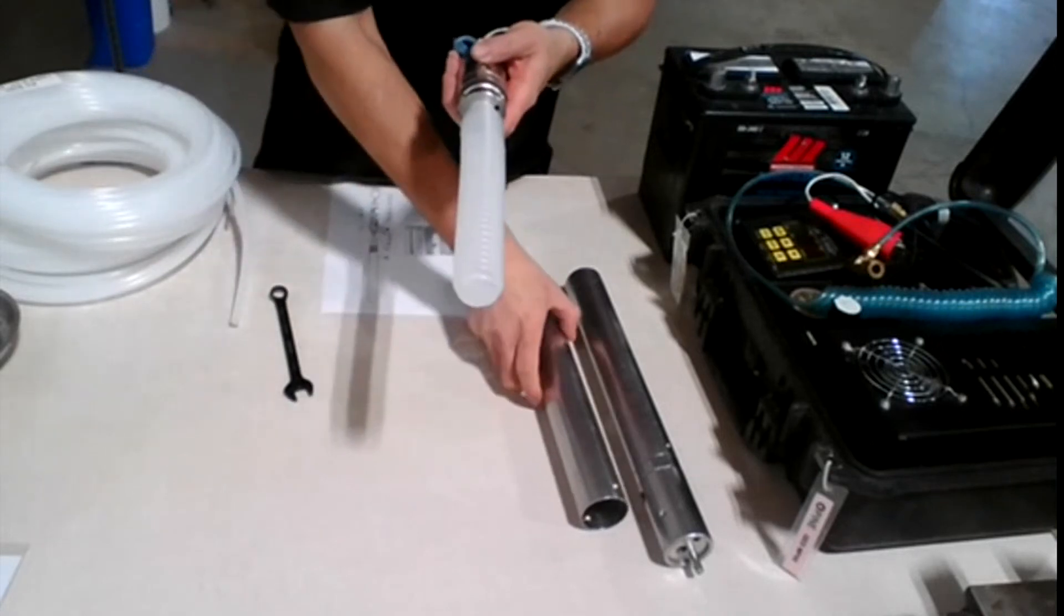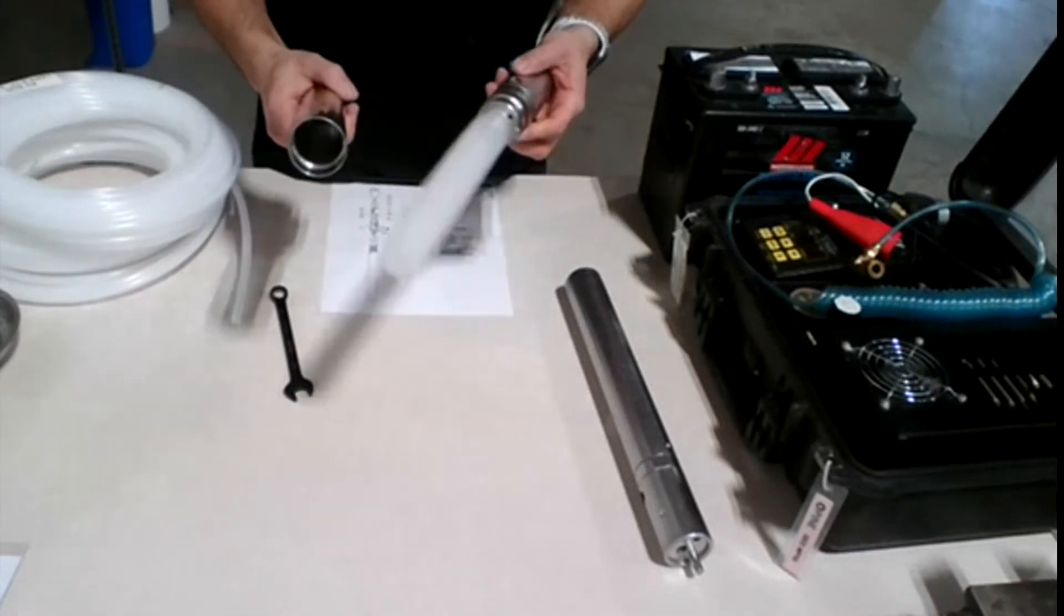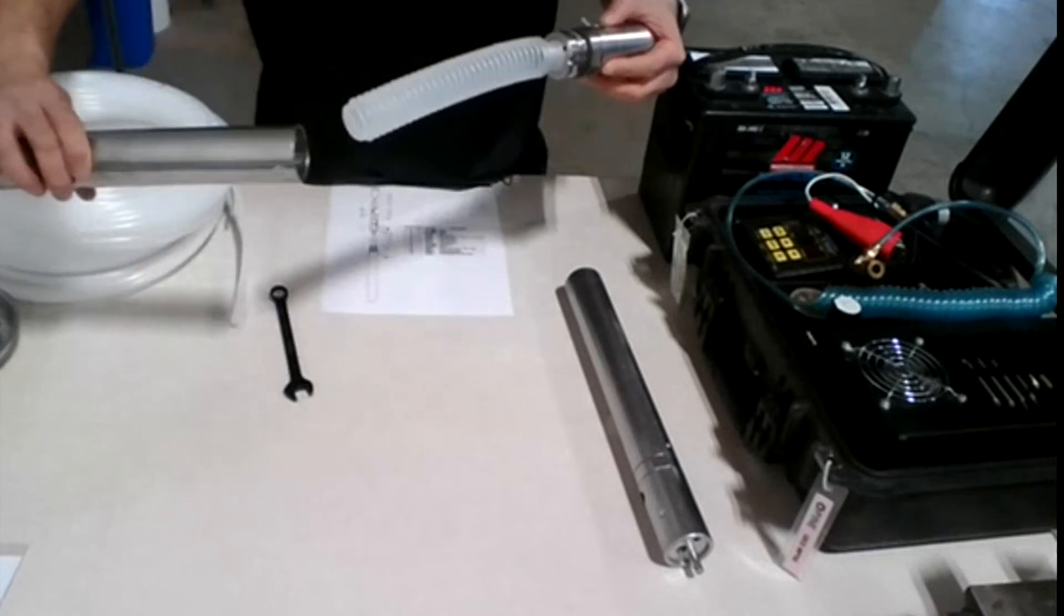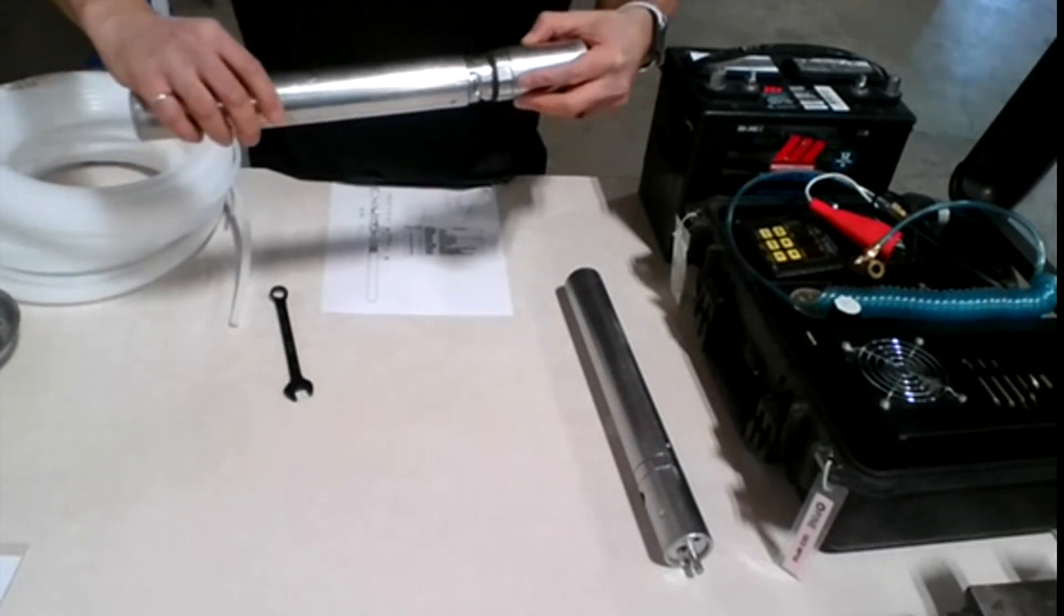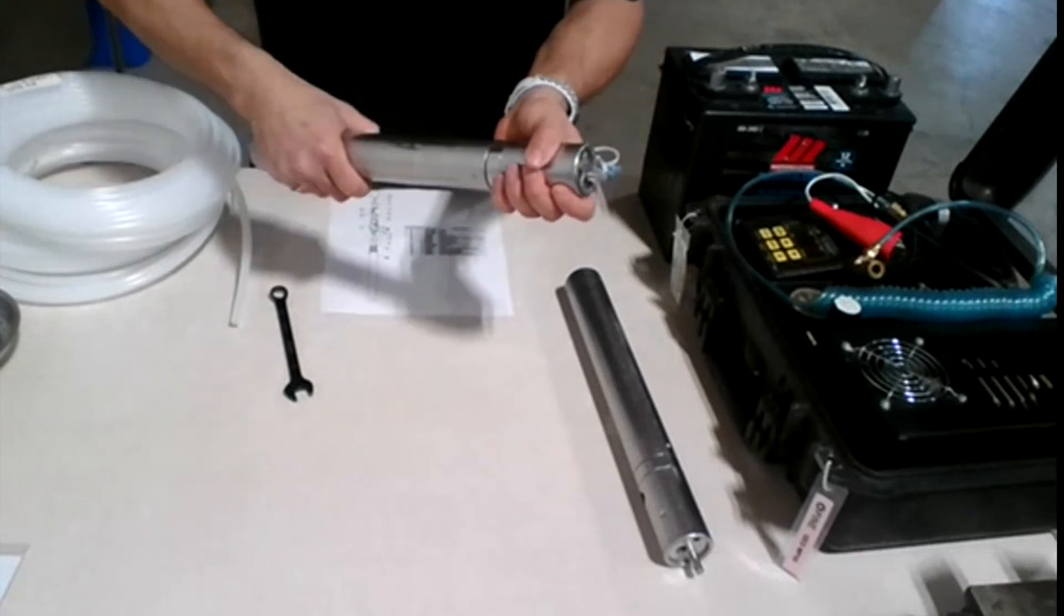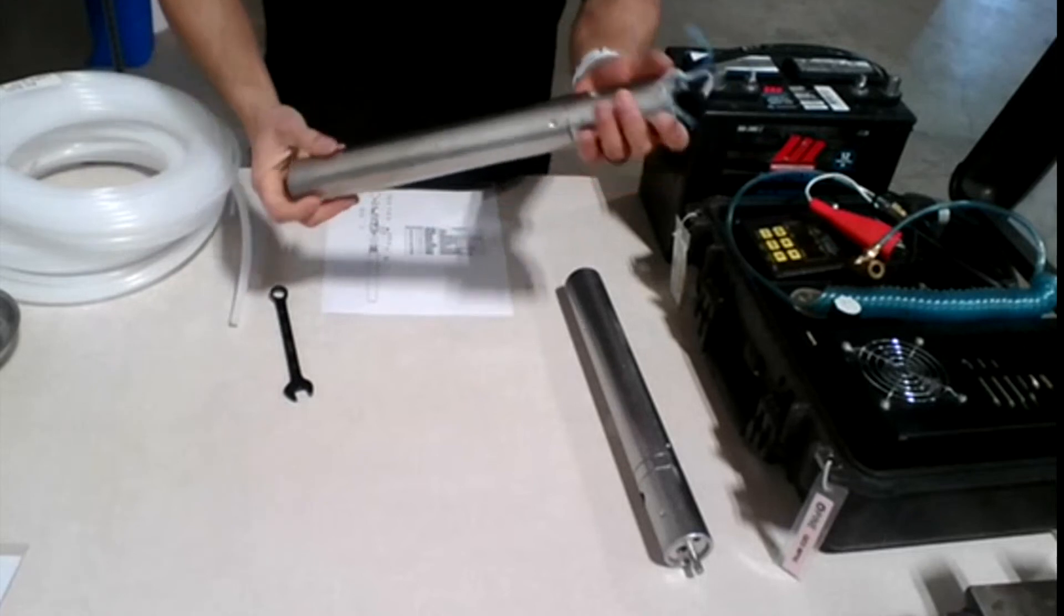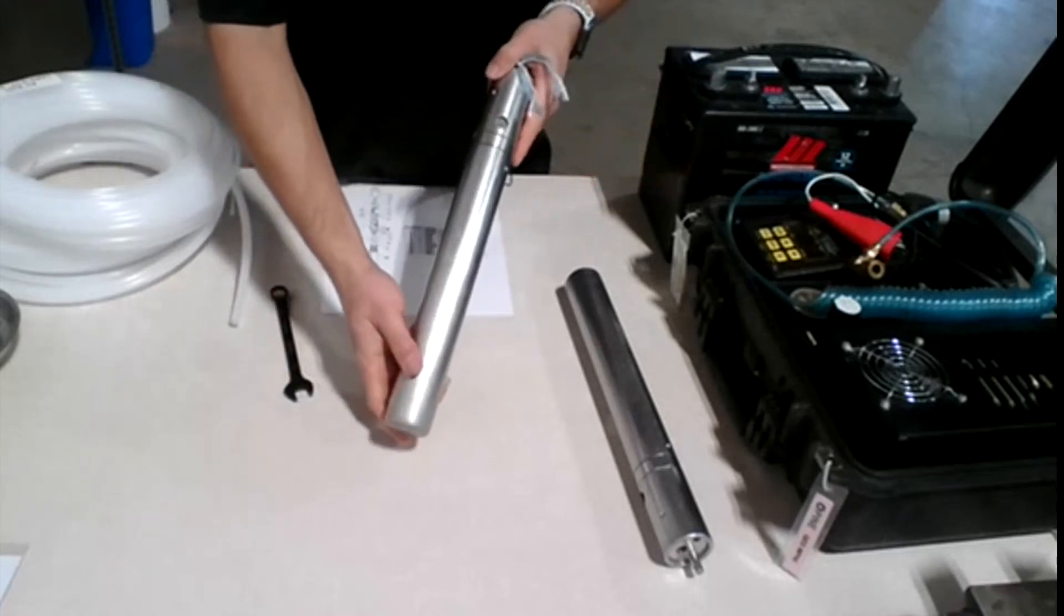Final step would be sliding the casing into the pump itself to seal it. Just screw it in like that. Give it a good screw. Make sure it doesn't move anywhere. And now your pump is ready to go.